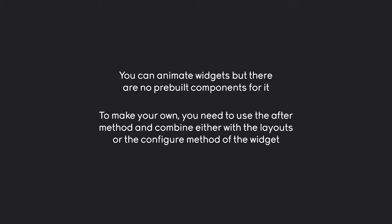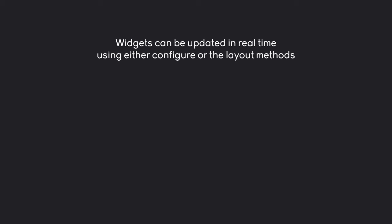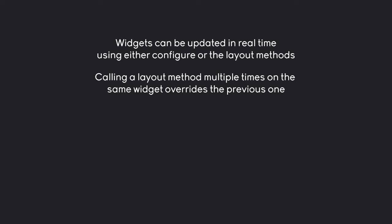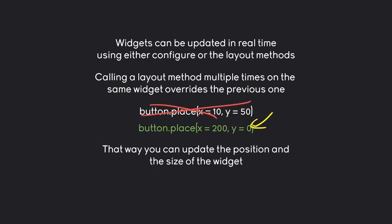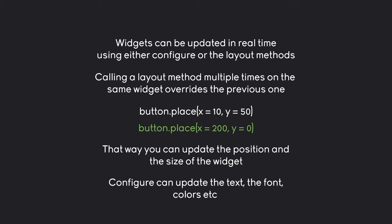Widgets can be updated in real time using either configure or the layout methods. For example, if you are calling a layout method multiple times the current one overwrites the previous one. If we call button.place once with x being 10 and y being 50 and then call it again with 210, only the second one will be displayed. The previous one will simply be removed. That way you can update the position and size of a widget in real time. On top of that you can use configure to update the text, font, colors, and more.